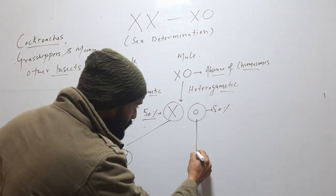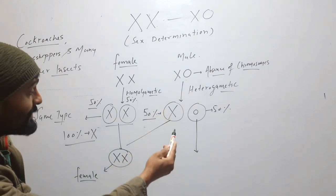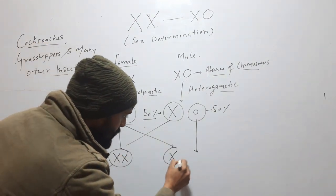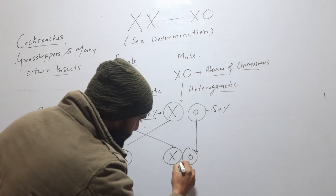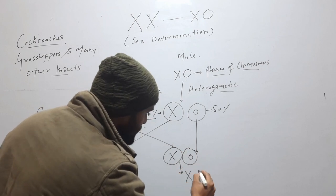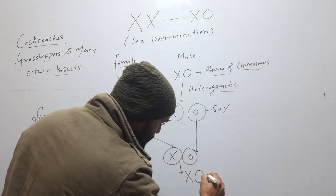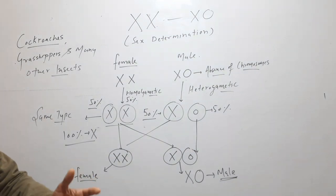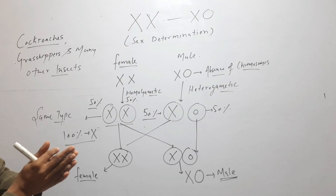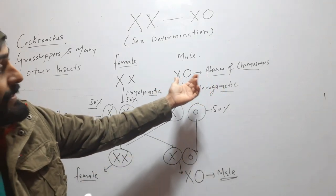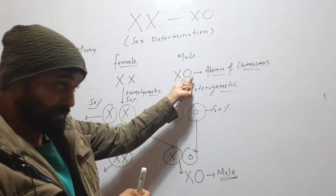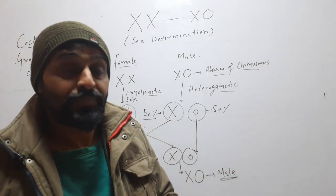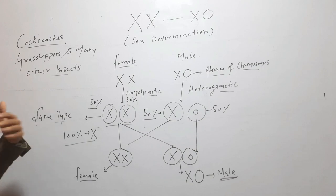And when the chromosome in which X is absent comes from the male — female always gives a gamete with X — then it will be X and O, so it will be male. The gamete of male is the decider gamete: if it gives X, then it will be female; if it gives O, then its sex will be male. So this is the XX and XO type of sex determination. It is found in grasshoppers, cockroaches and many other insects.